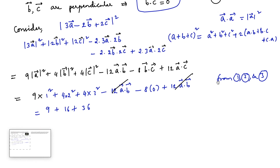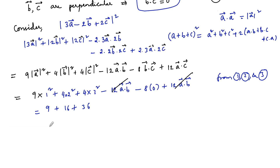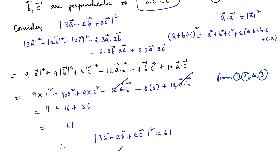So we get 9 + 16 + 36, which equals 25 + 36 = 61. Therefore mod(3A - 2B + 2C)² = 61, and mod(3A - 2B + 2C) = √61.